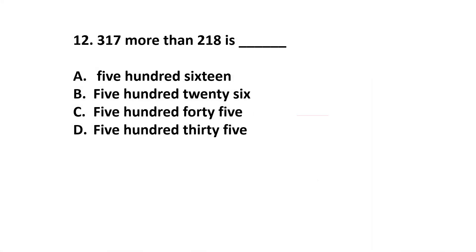Question number 12. 317 more than 218 is dash. 317 more than 218 means 317 plus 218. 7 plus 8 is 15, carry over 1. 1 plus 1 plus 1 is 3, and 3 plus 2 is 5. This gives 535. Option D is 535.